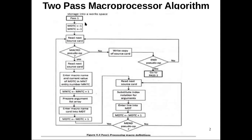Once initialization is done, we read the source program line by line. For each line, we perform two tasks. When reading each line from the source program, we check whether it is a macro definition or not. If it is a macro definition, we store the entire macro definition into the database called the macro definition table. If that particular line is not a macro definition, then that line has to be copied into secondary storage to be used by pass two.